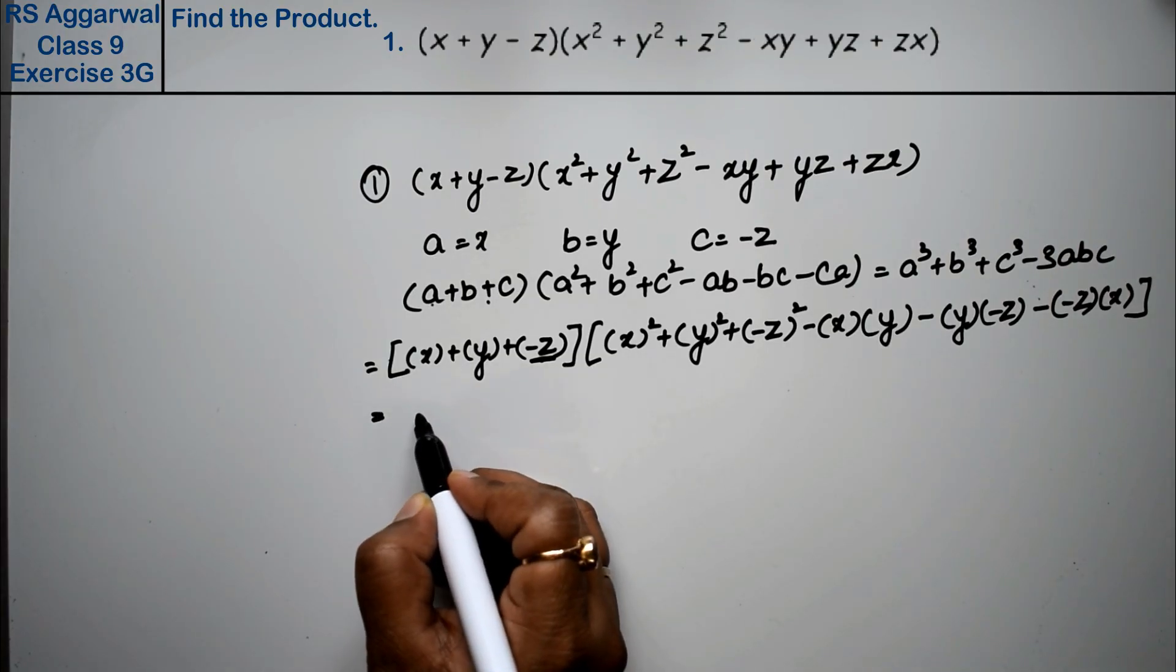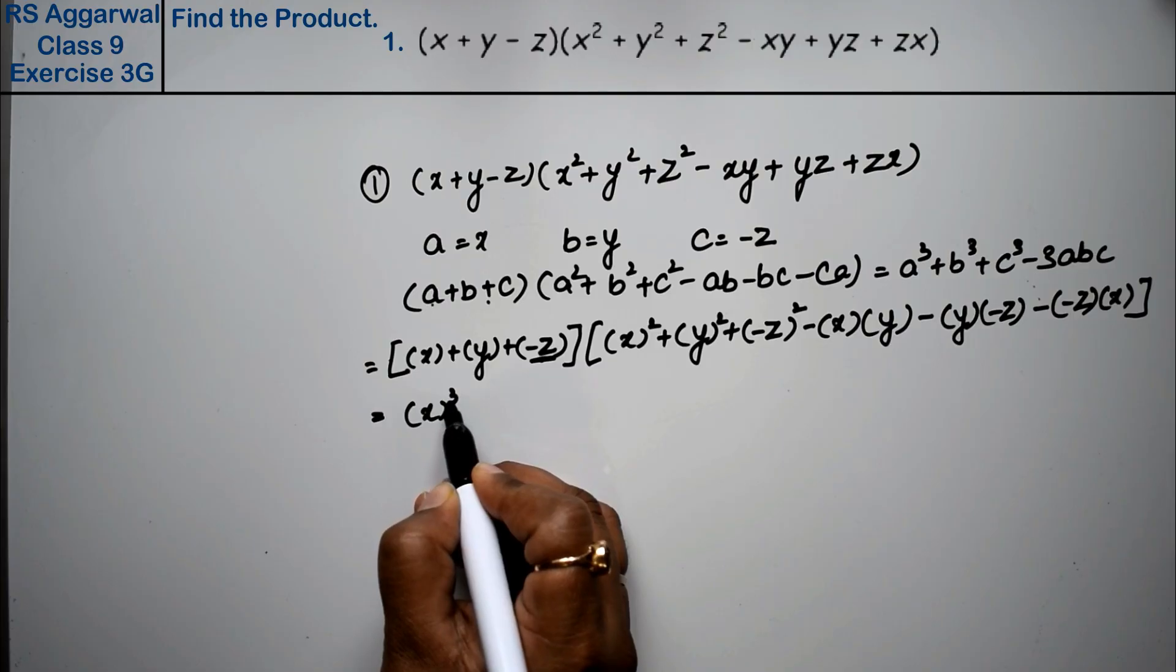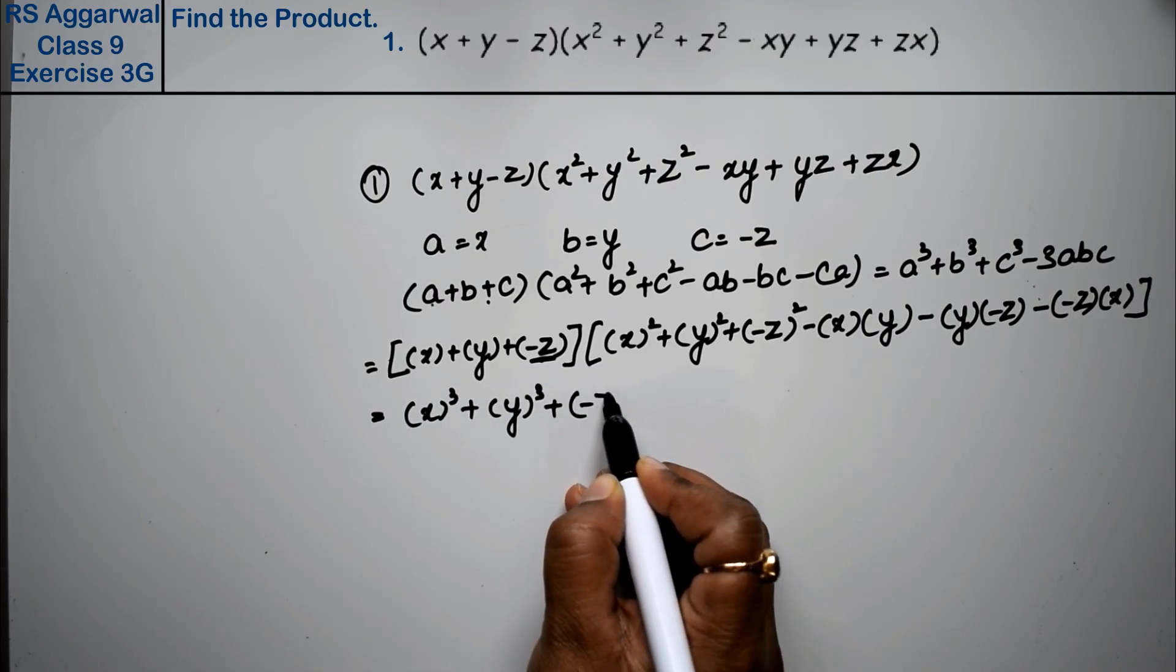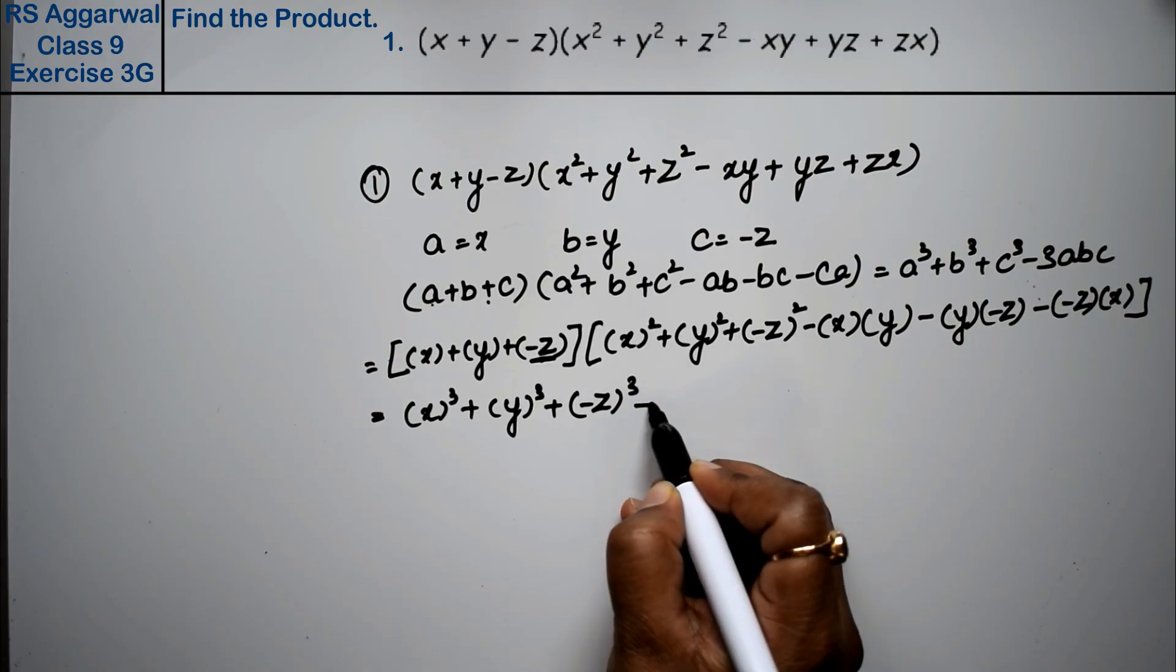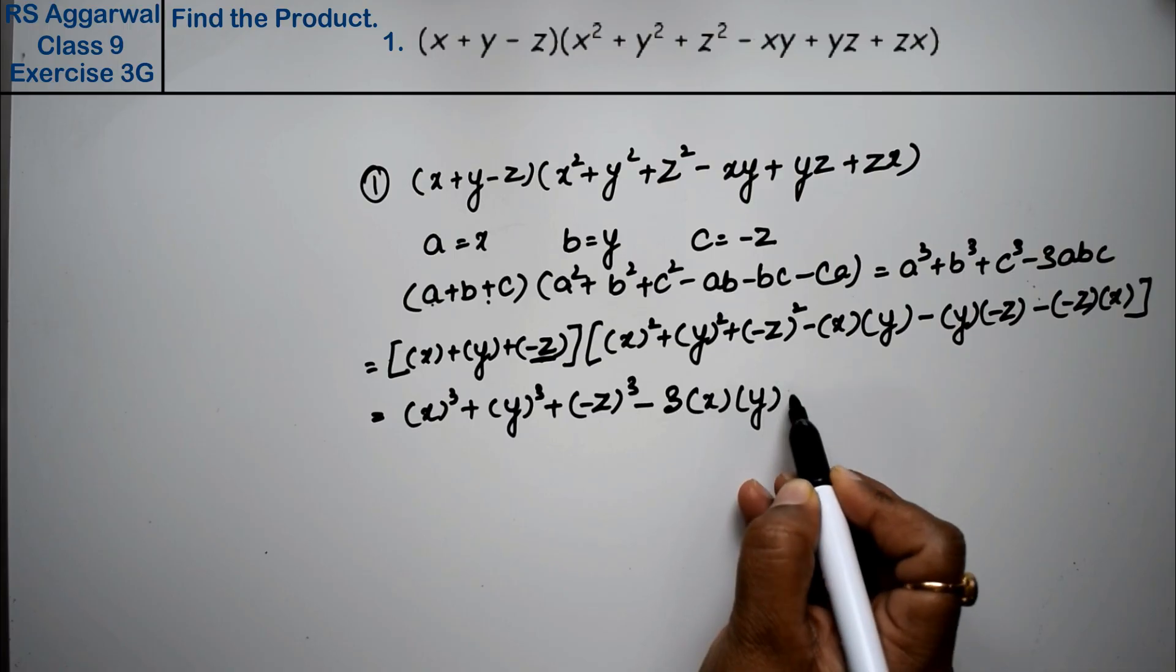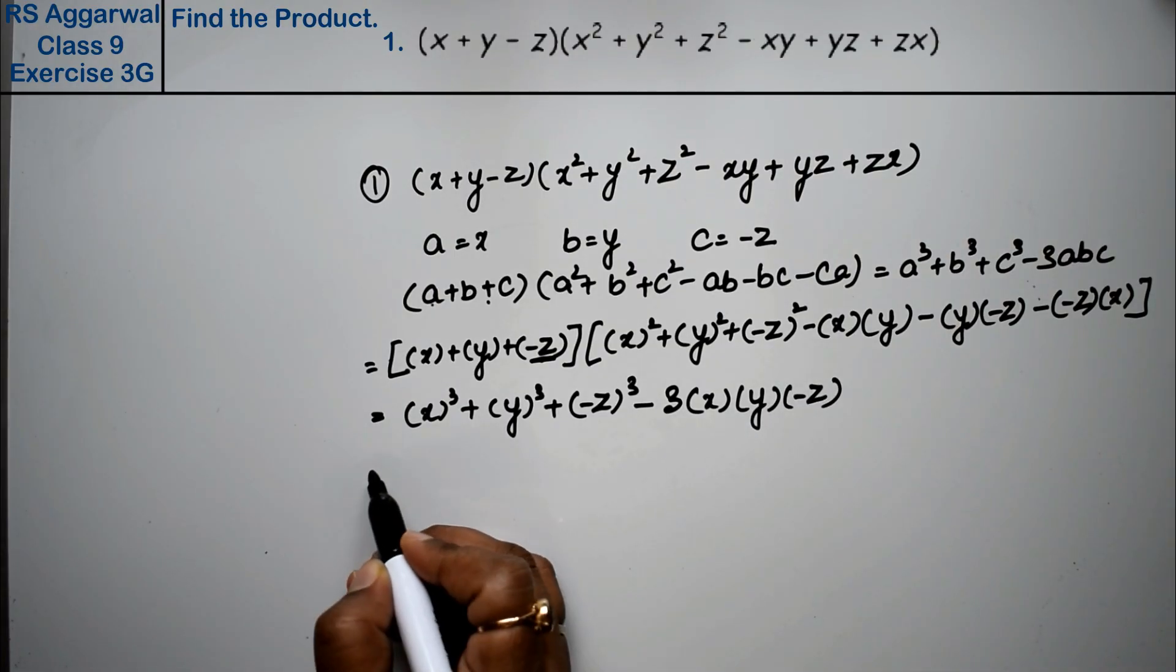This becomes our formula. a³, a is x, x³ plus y³ plus c which is minus z whole cube minus 3 times x times y times minus z, right friends?